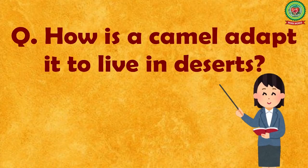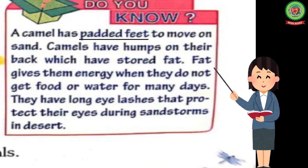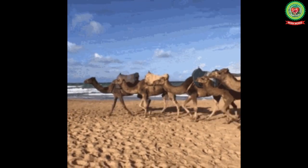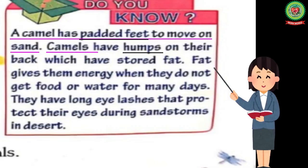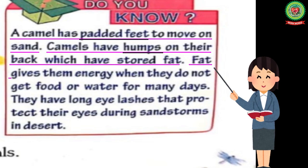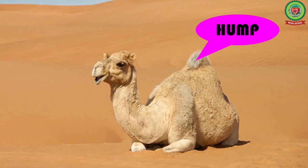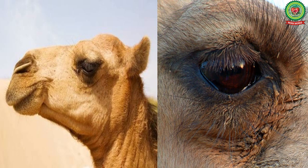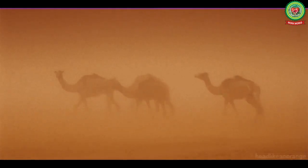How is a camel adapted to live in deserts? A camel has padded feet to move on sand — underline padded feet, meaning cushioned feet. The padded feet help the camel to move on the sandy soil of deserts. Camels have humps on their back which have stored fat — underline humps, meaning a large, round, raised area. Fat gives them energy when they do not get food or water for many days, so the hump stores fat and provides energy to the camel when needed. They also have long eyelashes that protect their eyes during sandstorms in deserts.